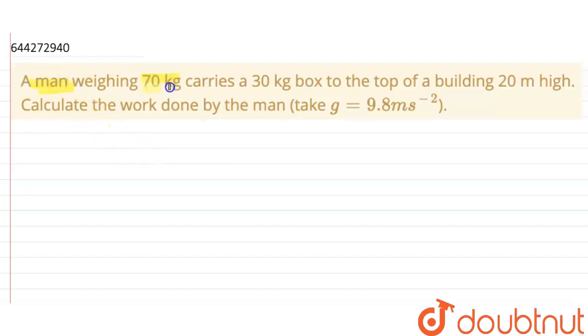A man weighing 70 kg carries a 30 kg box to the top of a building 20 meters high. Calculate the work done by the man. Take g equals 9.8 meter per second square.